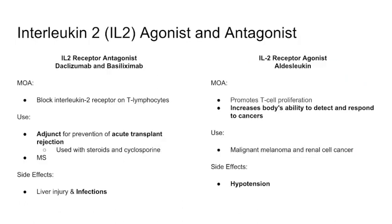The IL-2 receptor antagonists are daclizumab and basiliximab. These block interleukin-2 receptors on T cells, preventing T cell proliferation. They're used as adjuncts in transplant, typically alongside steroids or cyclosporine, and can also be used for MS. The main side effect to know is increased risk of infections due to immune suppression.